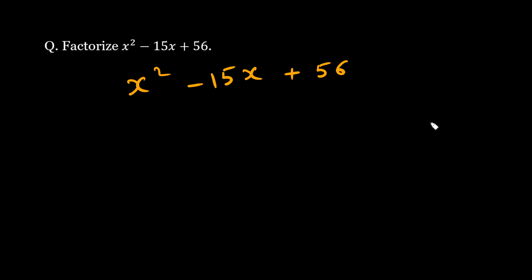We have a set pattern. What we can do is take this number, the constant value, and the coefficient of x². I will multiply these two, so 56 into 1, which is nothing but 56.